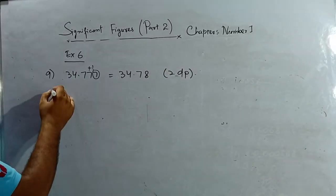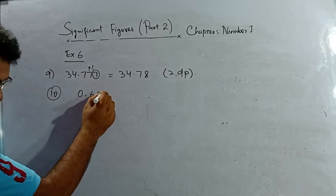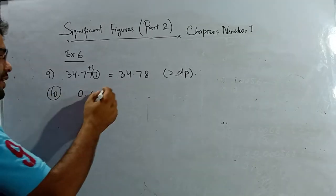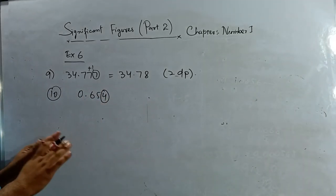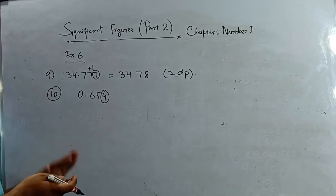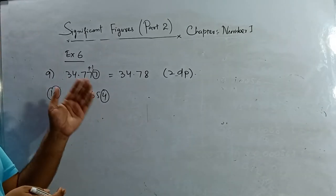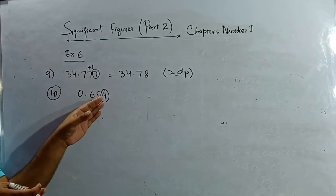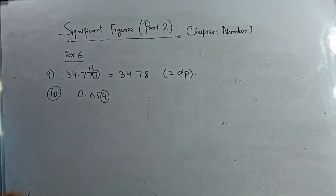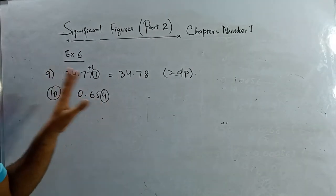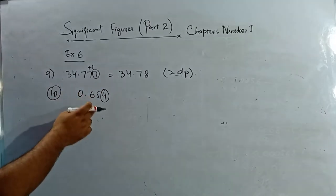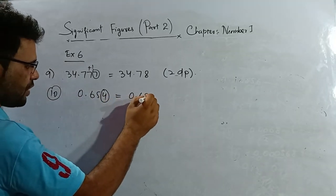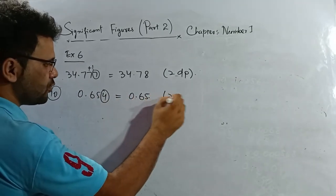Question number 10: 0.654, write corrected to two decimal places. Check the third decimal place — same rule applies. If it is less than five, keep as it is. The answer is 0.65, two decimal places. The rule for rounding decimal places is the same as for significant figures — check the next position and round accordingly.